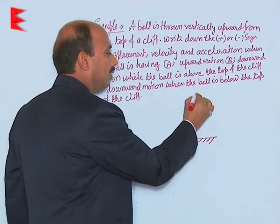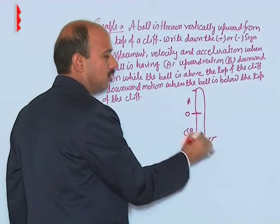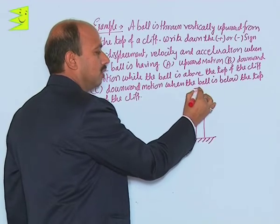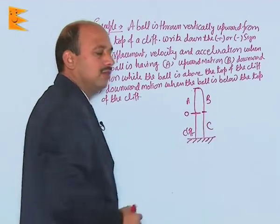The starting point I have assumed as origin. Now the ball is going like this—this is the A part, it is going here then coming back to the ground. This point is here, and this portion we can take B, and this we can take C.